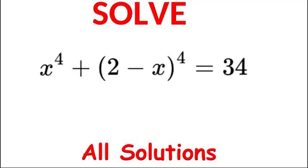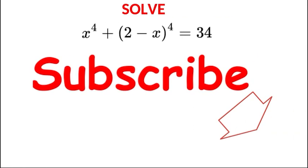Hello and a very warm welcome back to Maths Plus. Today we're solving the polynomial x to the power of 4 plus (2 minus x) to the power of 4 is equal to 34, and we're solving for all solutions. Maybe give it a go yourself — pause the video and let me know how you get on. If you're new to the channel, don't forget to subscribe and give a thumbs up. Let's get started.